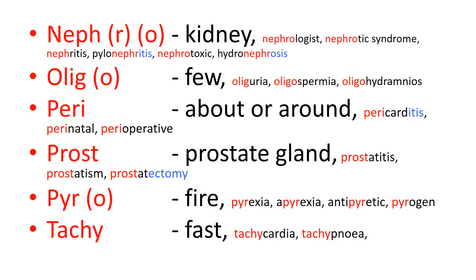'Olig' or 'oligo' means few or not enough. Oliguria would be low volumes of urine. Oligospermia means there's not enough sperm in the seminal fluid, meaning conception is less likely. Oligohydramnios is a deficiency in the amount of amniotic fluid surrounding the fetus, potentially giving rise to congenital birth defects and sometimes what we call Potter syndrome.